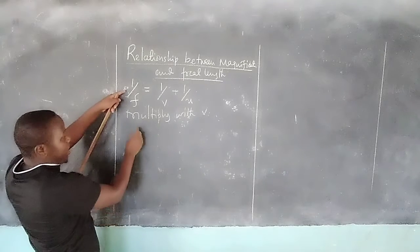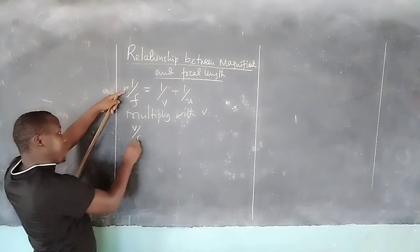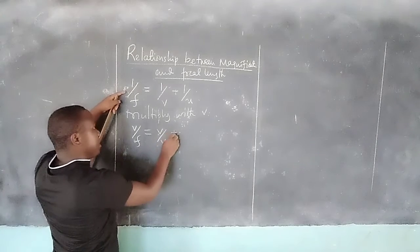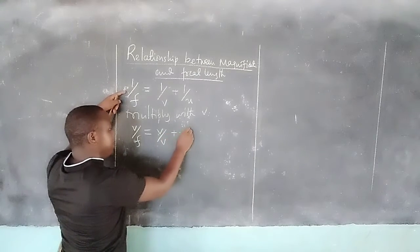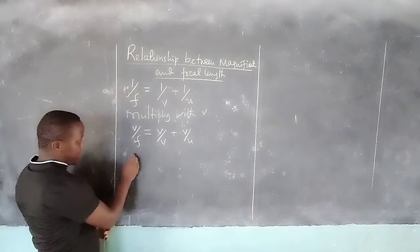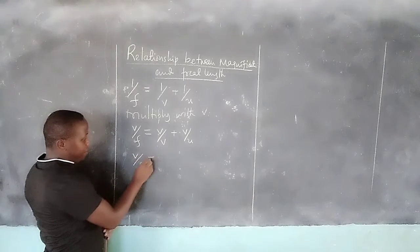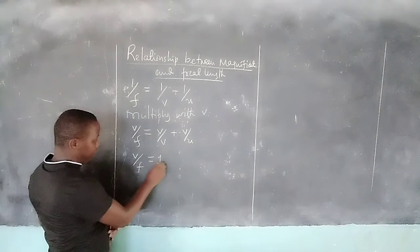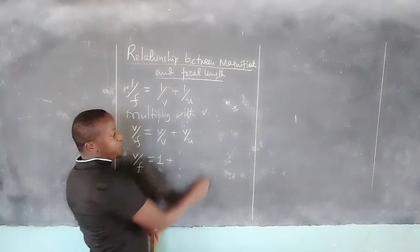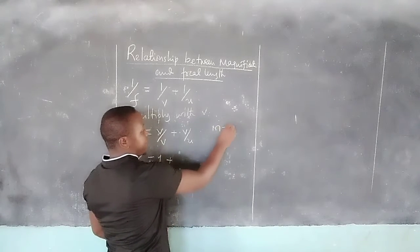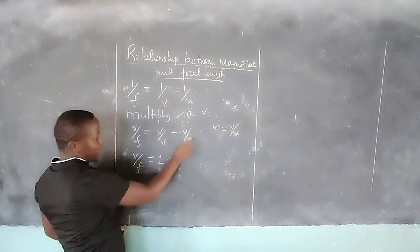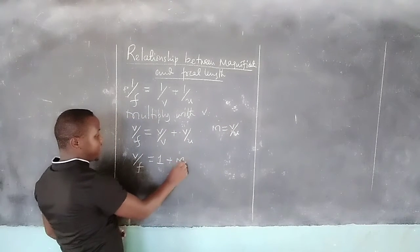Multiplying by V gives V/F = V/V + V/U, which simplifies to V/F = 1 + V/U. Remember, according to the definition, magnification is given by V/U. This means instead of V/U we can substitute magnification M.